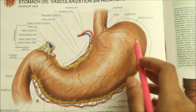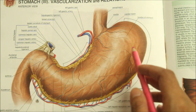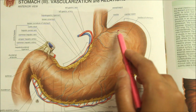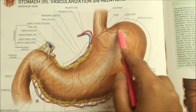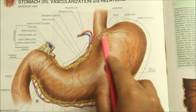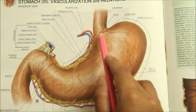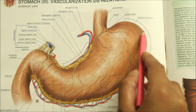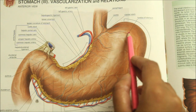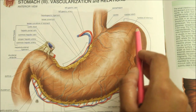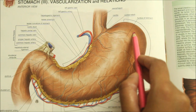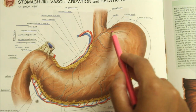The fundus of the stomach is the upper convex dome-shaped part, situated above a horizontal line drawn at the level of the cardiac orifice. It is commonly distended with gas, which is seen clearly on radiographic examination under the left dome of the diaphragm.